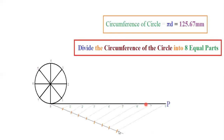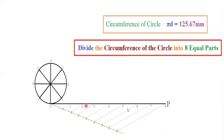Connect the endpoint of the arc to the end of the line, then draw parallel lines to divide the circumference line into 8 equal parts. On the circumference of the circle, you will get 8 equal division points, which you can name as 1 dash, 2 dash, 3 dash, and so on. The corresponding points on the circle can be named 1, 2, 3, and so on.